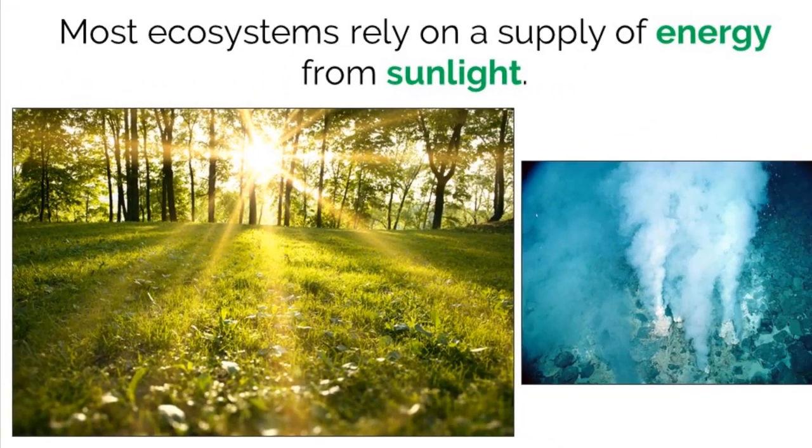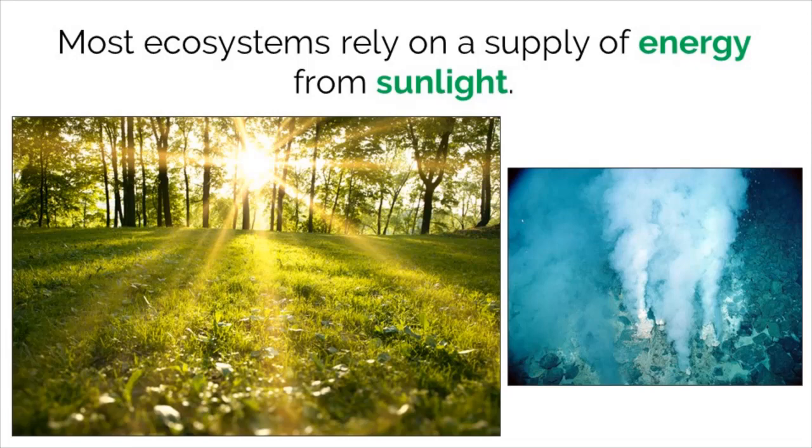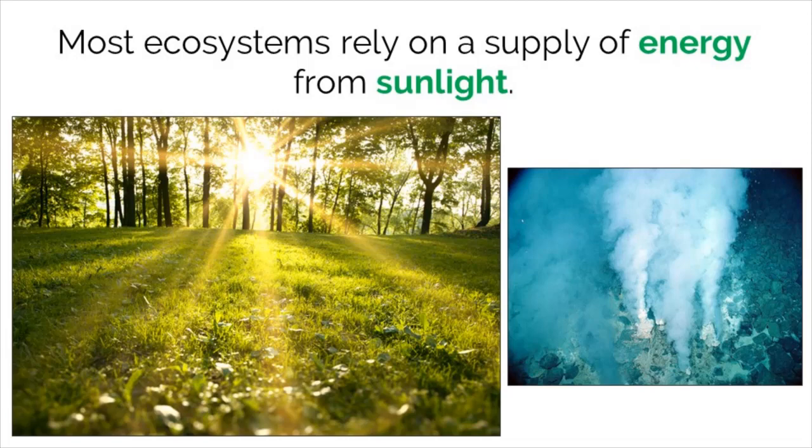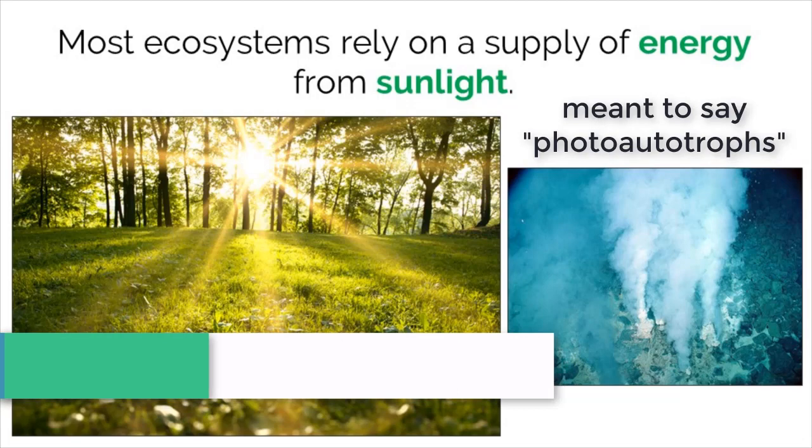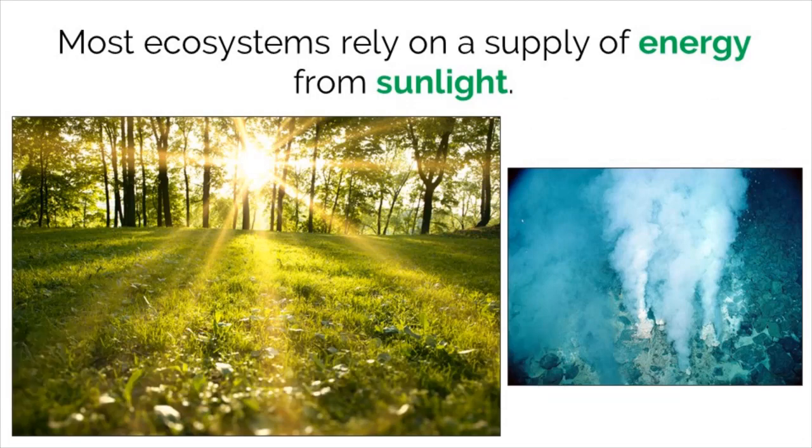While this is the norm, there are always exceptions, meaning there are some organisms that do not rely on sunlight for energy, but instead rely on a different source. So what are these organisms? They are called chemotrophs. Instead of getting their energy from the sun like autotrophs do, chemotrophs get their energy from breaking down organic or inorganic molecules within the environment.